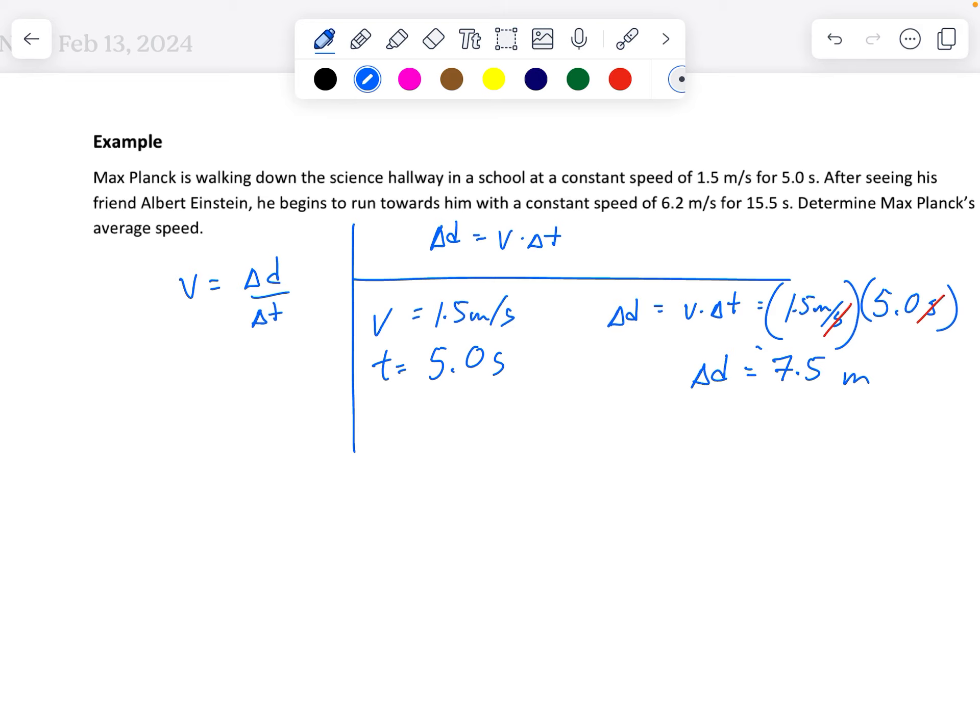So that's how far this character Max Planck travels in the first interval. And so he's traveling kind of slow. You can imagine he's kind of going slow and then all of a sudden he speeds up.